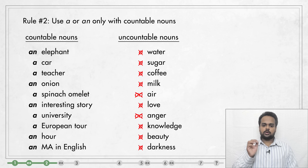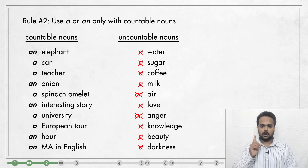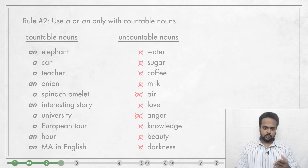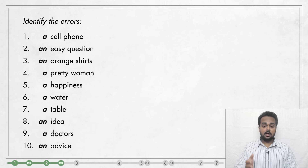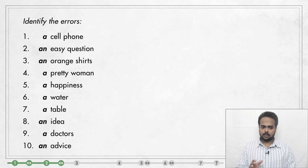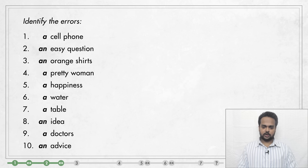Alright, so the rule is: you can only use A and AN if you're talking about one person or one thing. Let's do another quick exercise. Here are ten items again. This time, you see A or AN before the nouns, but some of these are wrong — they should not have A or AN before them. Stop the video, identify the mistakes, then play the video again and check.